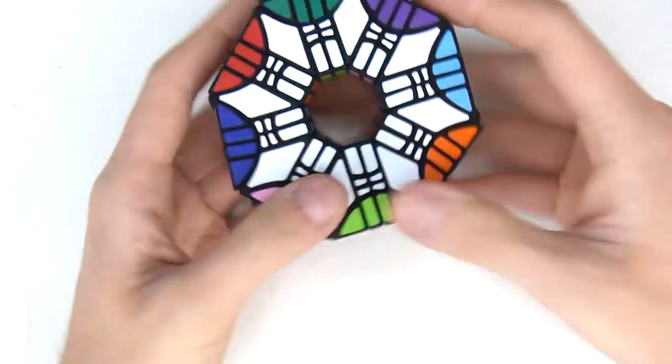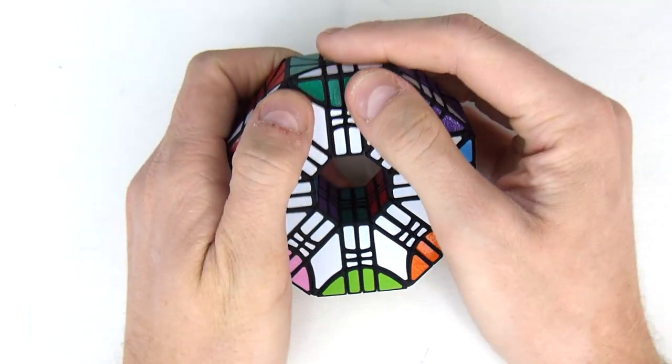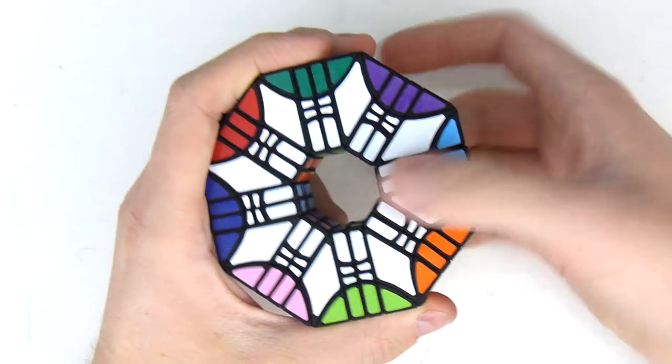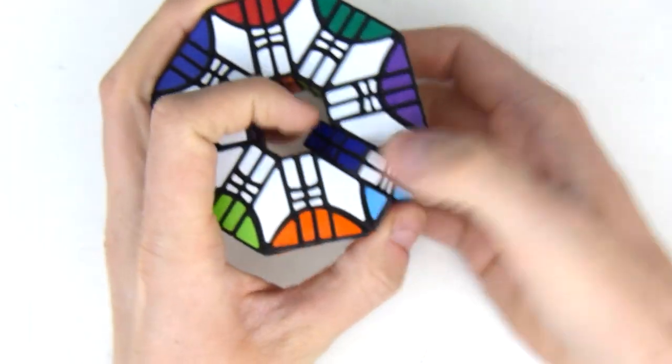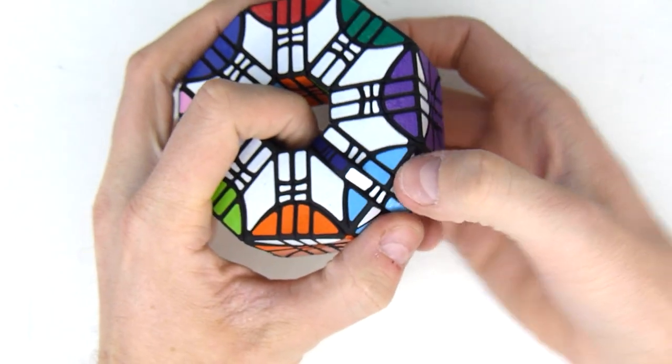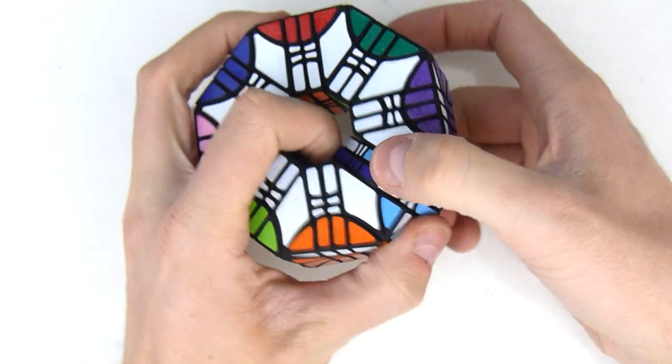And the last type of move that you can get are slice moves. And they are right here. And you can also split up the slices like that and just turn them individually.